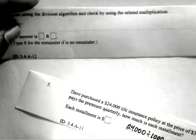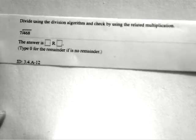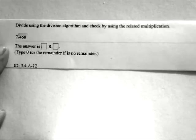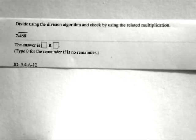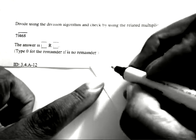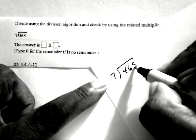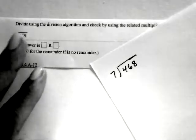And finally, number six. You're going to divide using a division algorithm, and then check by using the related multiplication. Now here we got 7 divided into 468, or 468 divided by 7.